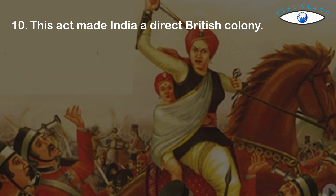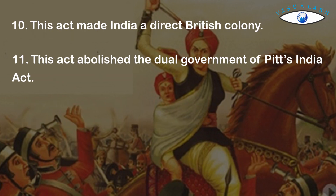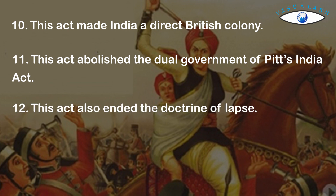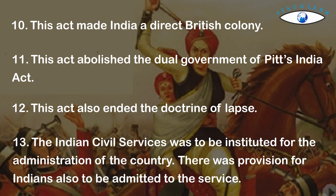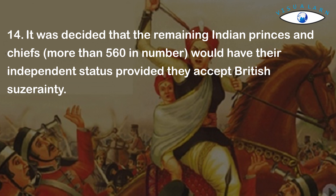This act made India a direct British colony and abolished the dual government of British India. The act also ended the doctrine of lapse. The Indian Civil Service was to be instituted for the administration of the country, with provisions for Indians to be admitted to the service. It was also decided that the rebelling Indian princes and chiefs would retain their independent status provided they accepted British suzerainty.